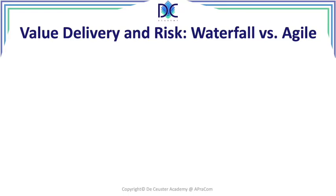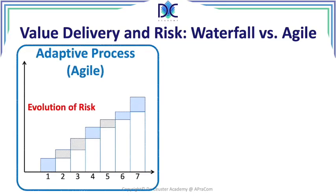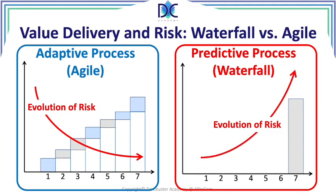When we look at value delivery between waterfall and Agile, in an adaptive process we take a small amount of risk at each step. The risk is decreasing towards the end of the project because we managed it step by step. With a waterfall approach, we assemble everything at the end, and it's only at the end that we see if something is working or not — a big disadvantage of the predictive process.